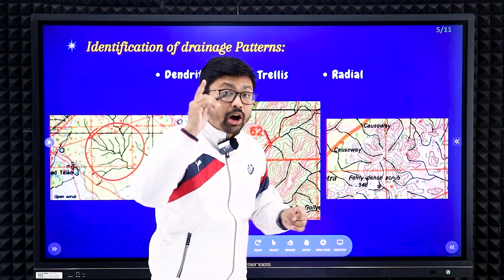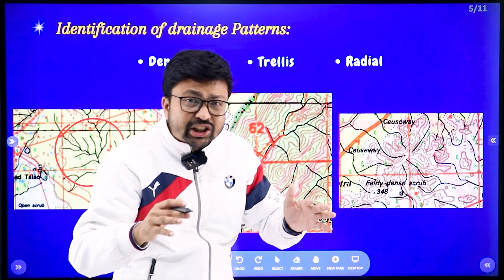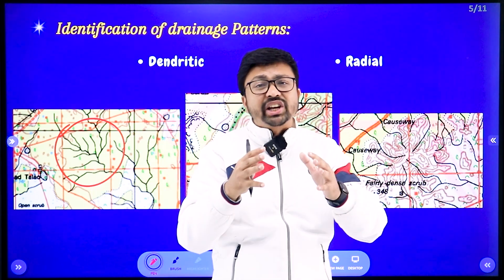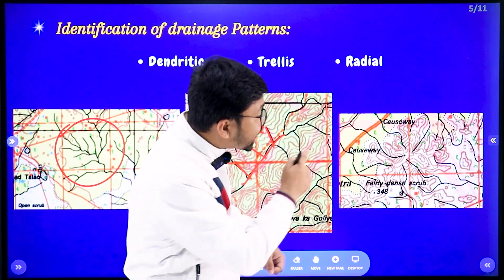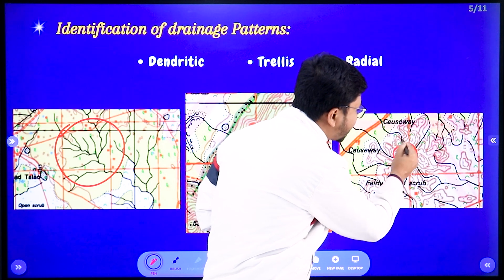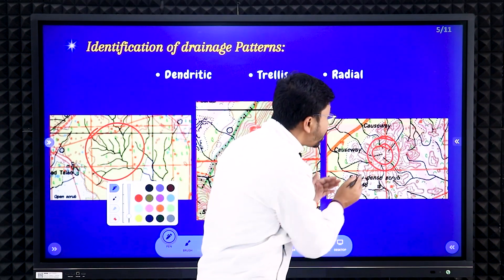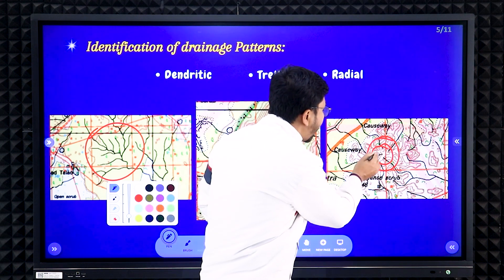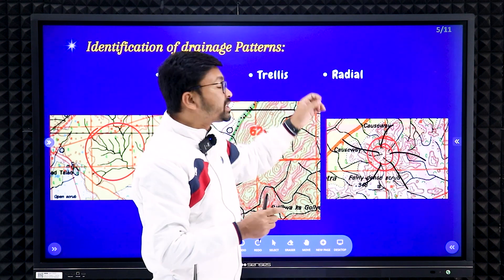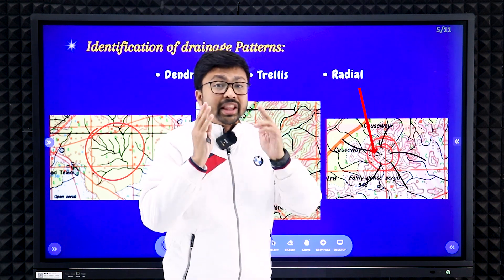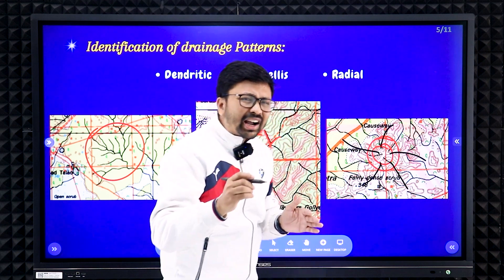The last drainage pattern is radial. For radial, you will see brown color patches in concentric circles. Rivers or streams cross these brown color patches going in different directions — that indicates a radial pattern. Also, when you see a black color line that is broken, it means that is a disappearing stream.